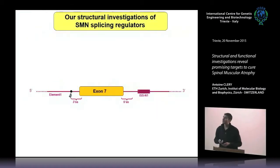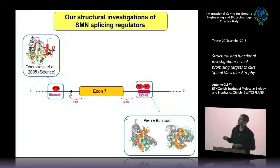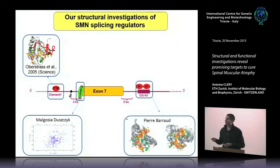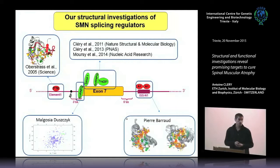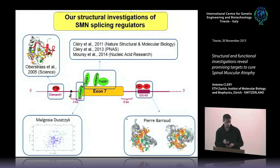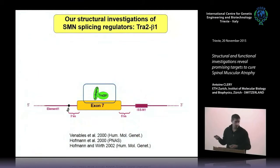We started solving structures. We already solved structures of two repressors, PTB and HNRNPA1, bound to RNA. We also started working on the activators of exon 7 inclusion: HNRNPQ. Today I would like to show you what we obtained with three splicing activators — SRSF1, HNRNPG, and TRA2-β1 — and I will start with TRA2-β1.